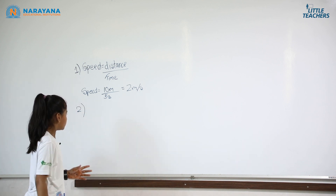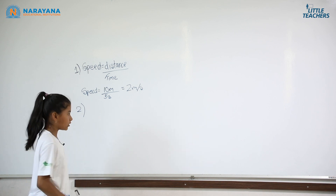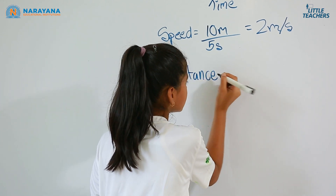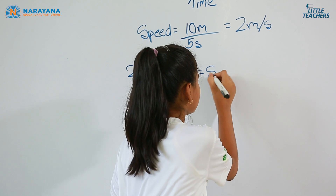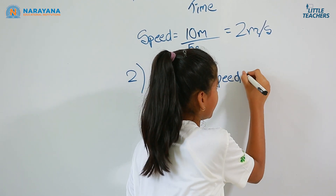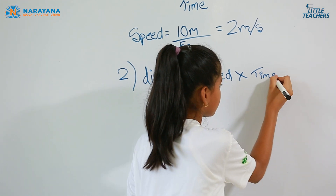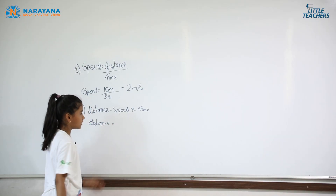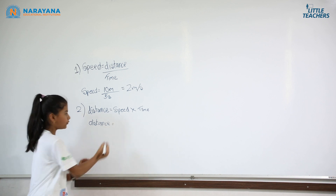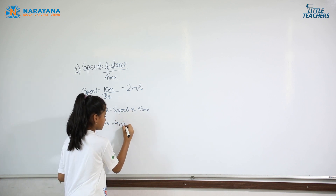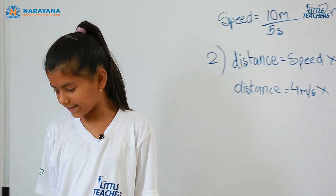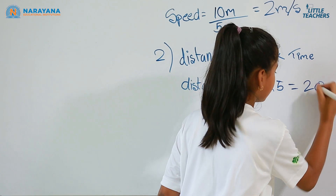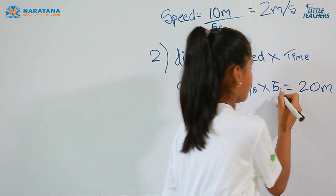Second question: we need to find the distance covered by the man. The formula for distance is Distance = Speed × Time. The speed of the man was 4 meters per second and the time he took was 5 seconds, so the distance equals 4 multiplied by 5, which is equal to 20 meters.